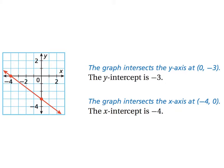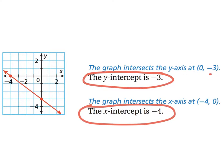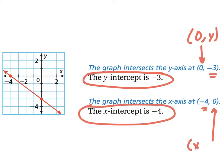When we talk about those intercepts, the coordinates were zero, negative three for the y-intercept and negative four, zero for the x-intercept. In standard practice, we say the y-intercept is negative three and the x-intercept is negative four. Every y-intercept has an x-coordinate of zero, and every x-intercept has a y-coordinate of zero. So a generic y-intercept is written as zero comma some y-number, and an x-intercept as some x-number comma zero.